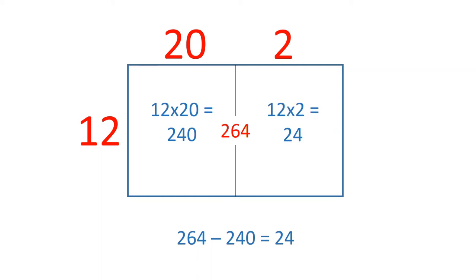If the length of the first section is 20 and the length of the second section is 2, then the total length is 22. That means that 264 divided by 12 equals 22.